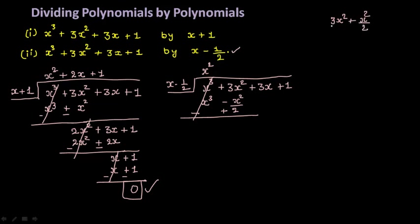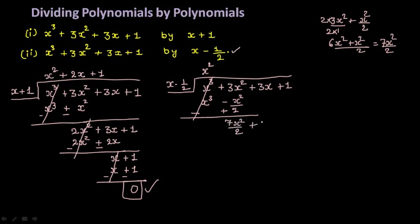This is a fraction and this is a whole number, so we need to find the LCM. Multiply by 2 over 2, giving 6x square plus x square by 2, which equals 7x square by 2. So here you will get 7x square by 2 plus 3x plus 1.